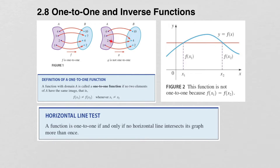So two different x values, if they go to the same y value, it can still be a function, but it's not a one-to-one function. One-to-one means that one x gets assigned to one y, and one y comes from exactly one x value.